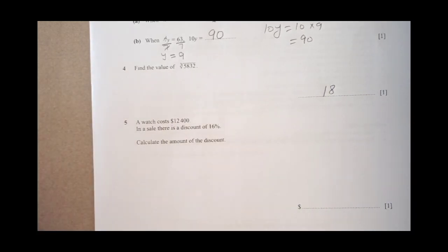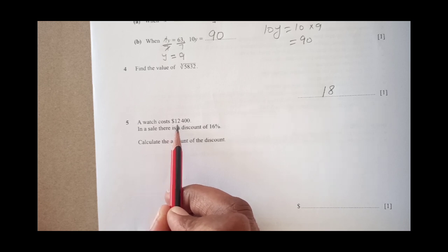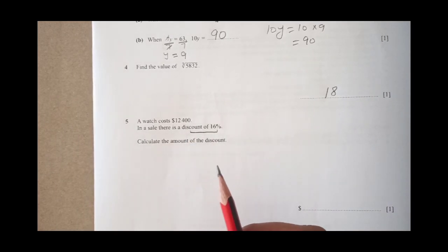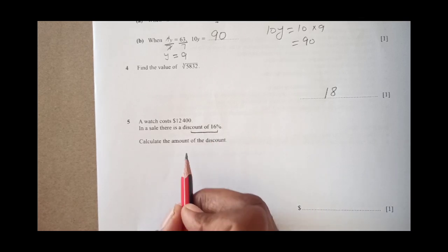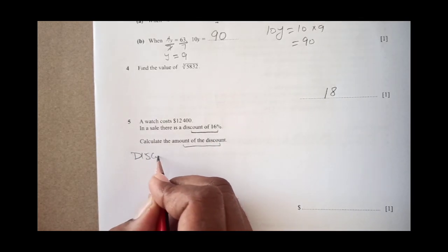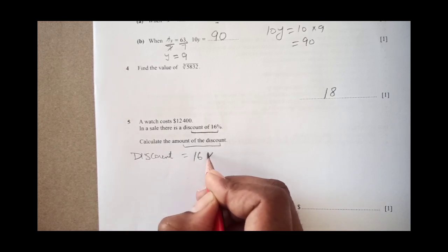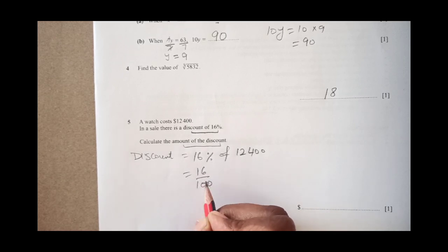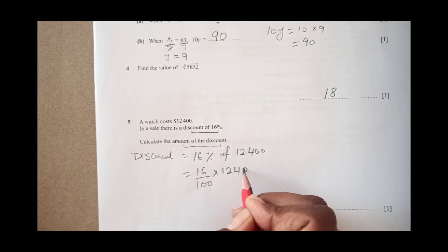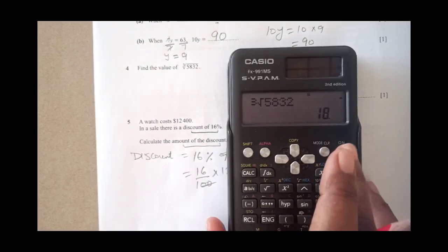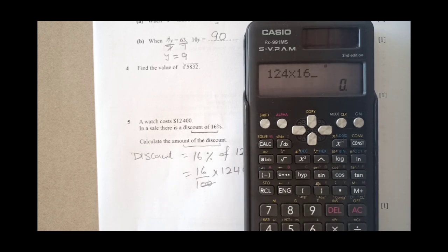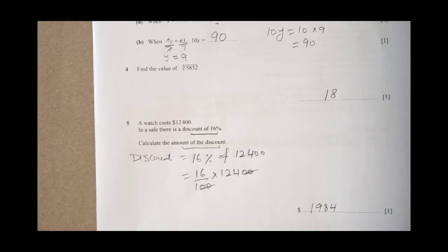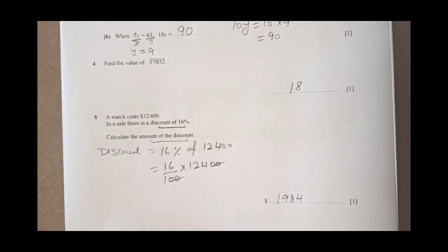Number 5, a watch costs $12,400. In a sale there is a discount of 16 percent. This is the actual cost and there is discount of 16 percent. Calculate the amount of discount. Discount is going to be 16 percent of 12,400. That means this is 16 over 100 times 12,400. These 2 zeros are gone, 124 times 16, which is 198. You can see these are very simple questions. You should not miss them. Try each and every question.